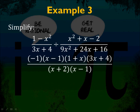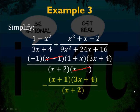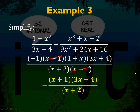Continuing Example 3 — cancel common factors. Both top and bottom have an (x minus 1), so those cancel. The final answer is negative(x plus 1)(3x plus 4) all over (x plus 2). If you distribute the negative sign inside one of the factors, that's fine. When you divide by a fraction — even with x's and x squareds — flip it over and multiply by the reciprocal, then cancel common factors.